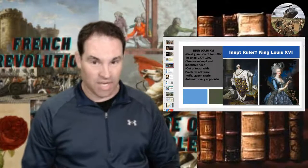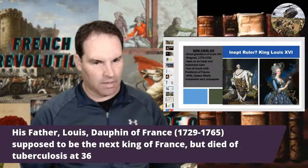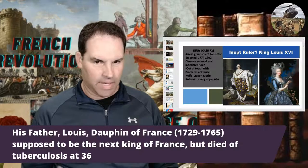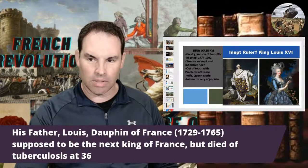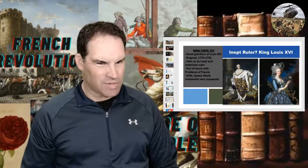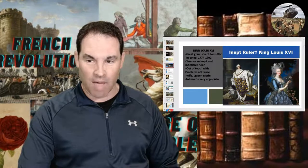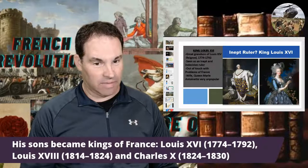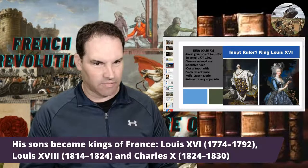Louis XVI's father was actually the Dauphin, who was supposed to be the ruler of France, but he died of tuberculosis in his 30s, so Louis XVI ended up on the throne. France was really behind countries like Britain in political, social, and economic changes. Louis XVI's father had three sons who were later kings of France: Louis XVI, Louis XVIII, and Charles X — all three were brothers, which I'll get to later after the Age of Napoleon.